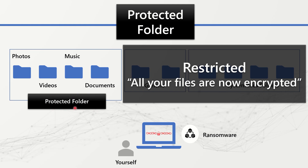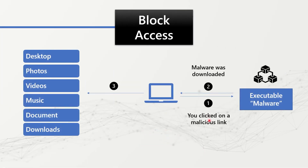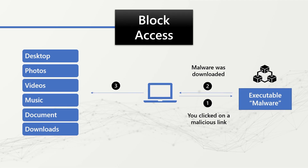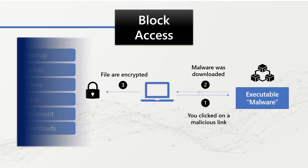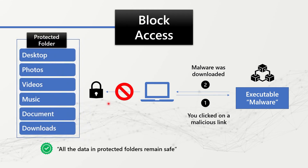Now let's talk about the third term: block access. Imagine a scenario where you clicked on a malicious link that resulted in malware being downloaded on your machine, which was responsible for a ransomware attack. Once ransomware affects a device, all files are encrypted. However, even if a ransomware attack affects your machine, you need a control in place that will block any kind of change to these protected folders, by checking what kind of application it is.